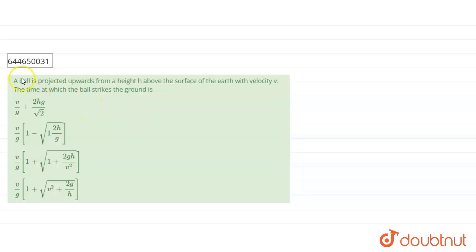Hello students, our question is: given that a ball is projected upwards from a height h above the surface of the earth with a velocity v, the time at which the ball strikes the ground is - here four options are given regarding the value of the time.